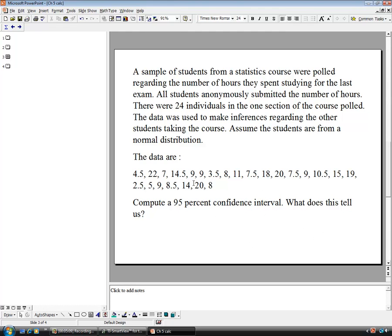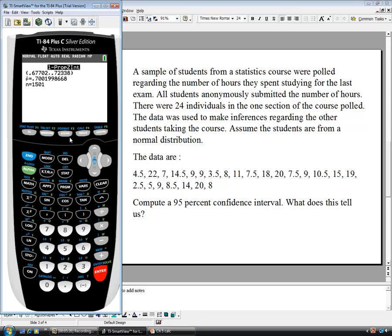These are the different data points. We have 22 data points. We're looking for a mean. Therefore, we're going to have quantitative data. We're going to use, because it's 24, small data, small number of data. We're going to deal with a T. So stat, tests, and T interval.